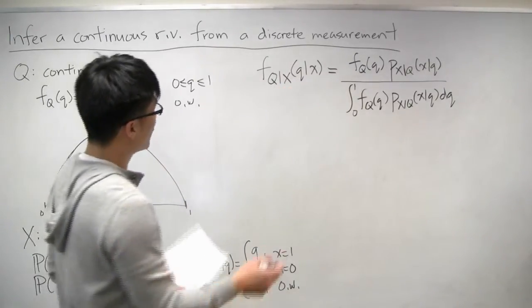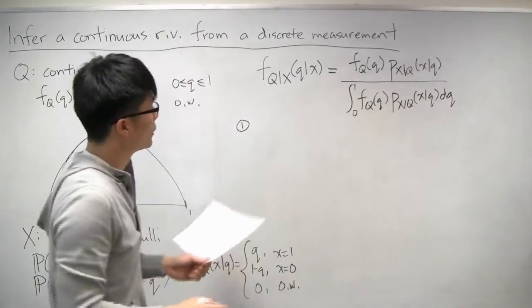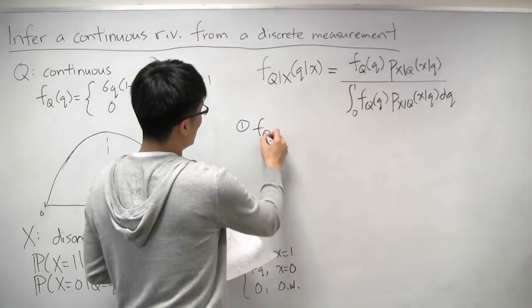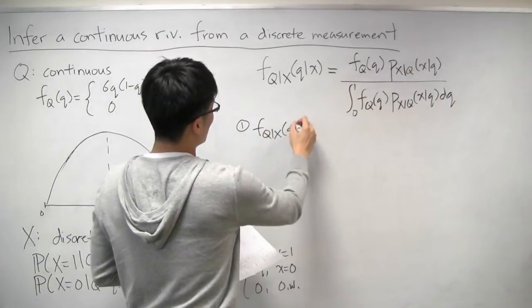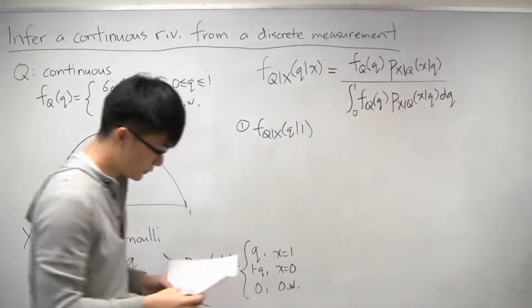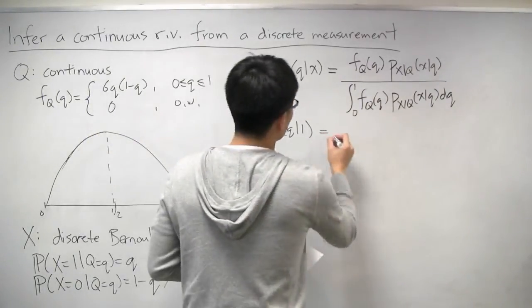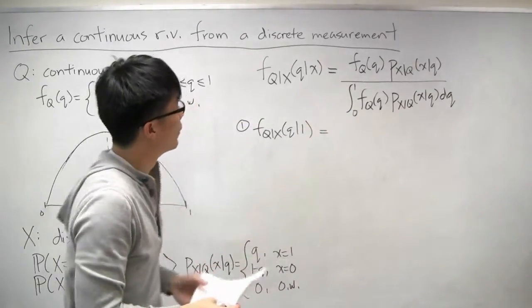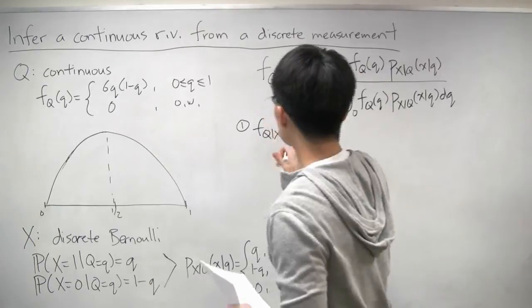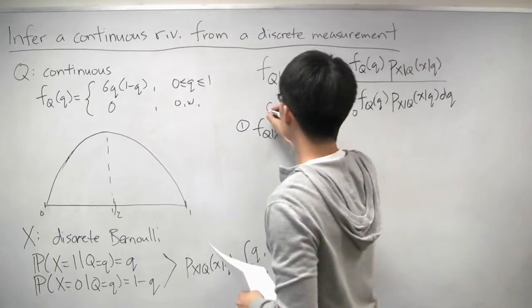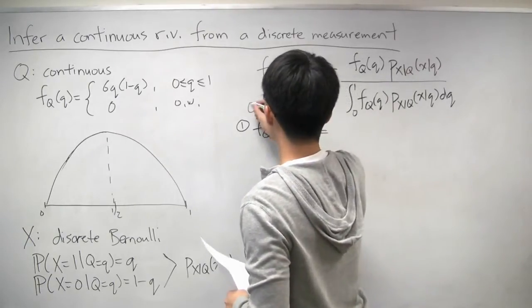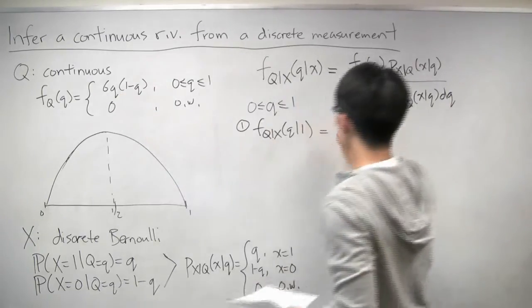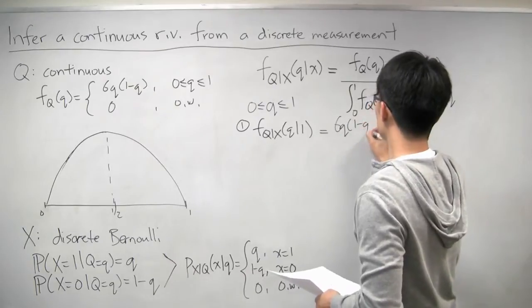So let's focus on the two different possibilities for x. The first one is, let's look at the case where x equals 1 first. And then now let's just plug in what all these different terms should be. Well, the PDF of q we're given. And of course, we're looking here at q between 0 and 1. And so within that range, the PDF of q is just 6q times 1 minus q.